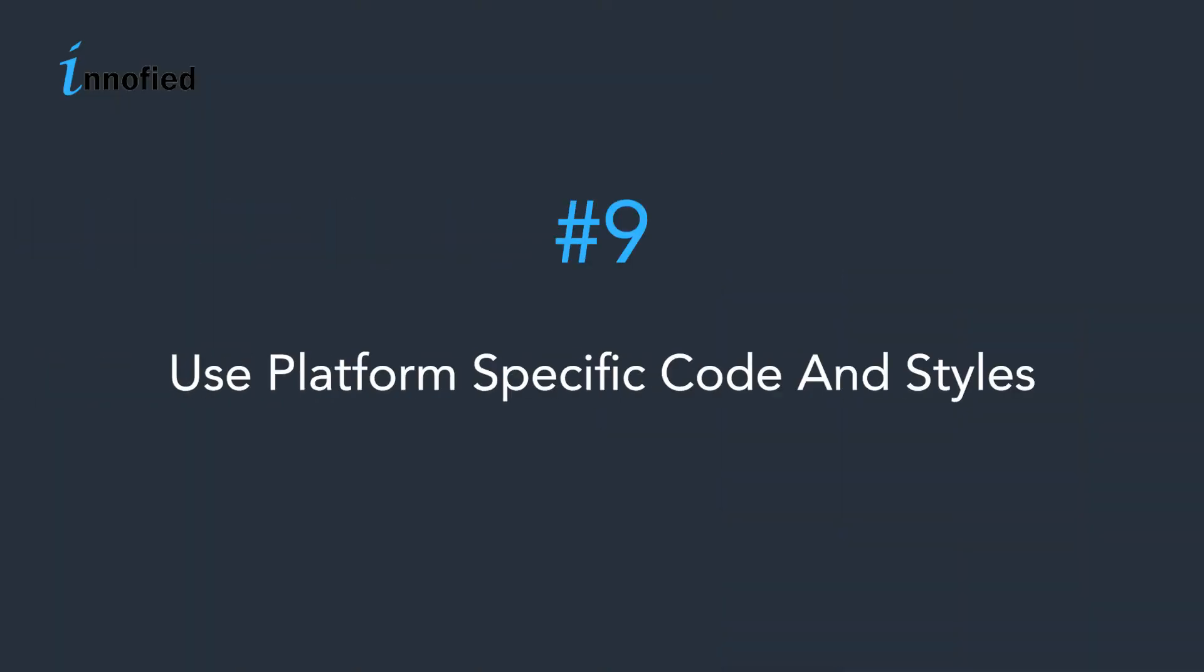Point number nine, use platform-specific code and styles. Though React Native offers built-in APIs to write your code that works on both the platforms, you will always end up writing platform-specific things like style sheets and callbacks. To organize your code better, use the platform module for style sheets is the best way to manage the styles. For example, you can use the platform.os or the platform.select APIs to automatically detect the platform and apply the right styles. Here I present to you a demo that shows how the platform module should be configured.